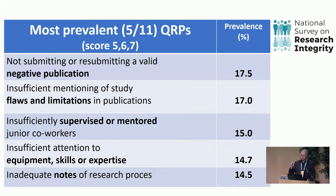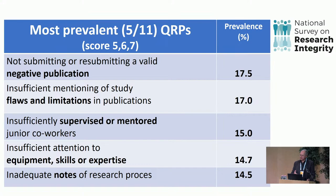Questionable research practices are things you can better not do. Five of the most prevalent are listed on this slide. People answered on a seven-point scale ranging from never to always during the last three years; frequency is taken to be the upper three values of that scale. Not submitting or resubmitting a valid negative publication was admitted by 8.5% of our population — self-admitted, so it's likely an underestimation. That is of course the root cause of the replication crisis. Selective reporting: almost 18% admit to that.